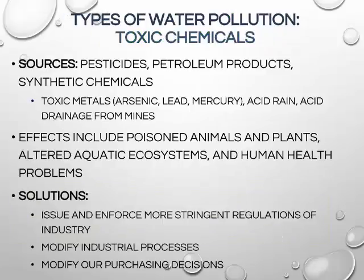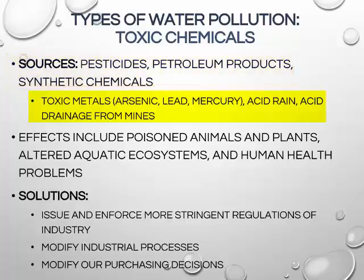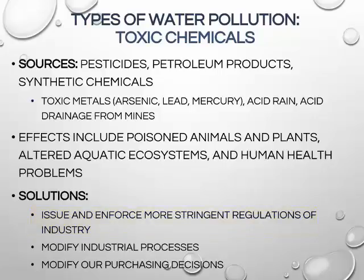Toxic chemicals are another source of water pollution, coming from pesticides, petroleum products, synthetic chemicals, toxic metals, acid rain, and acid mine drainage. This type of pollution is harmful to both the environment and human health. One solution is to implement more stringent regulations of industry, perhaps shifting from an innocent-until-proven-guilty philosophy to a precautionary principle philosophy of managing toxic compounds.